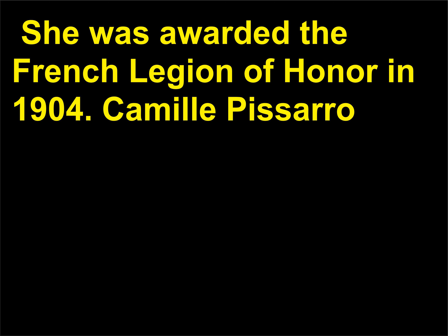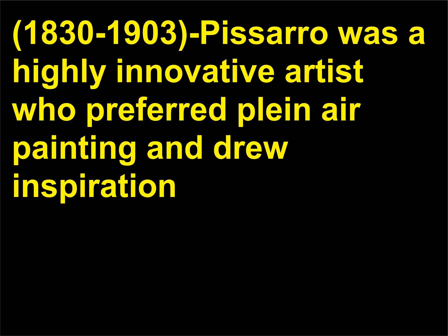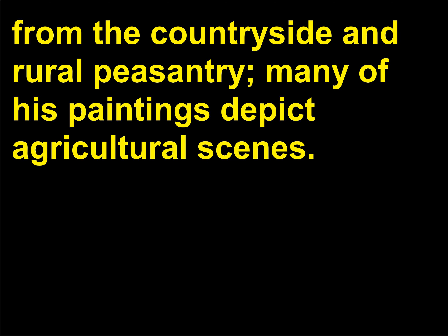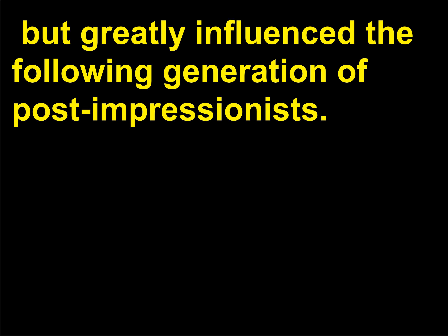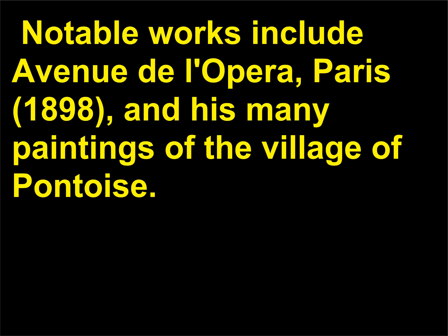Camille Pissarro (1830–1903) was a highly innovative artist who preferred plein air painting and drew inspiration from the countryside and rural peasantry; many of his paintings depict agricultural scenes. Pissarro applied thick globs of paint to his canvases, which didn't always win him favor with the critics, but greatly influenced the following generation of Post-Impressionists. Notable works include Avenue de l'Opéra, Paris (1898), and his many paintings of the village of Pontoise.